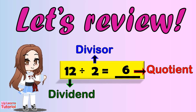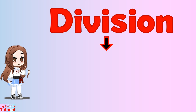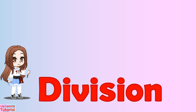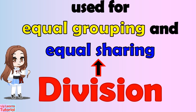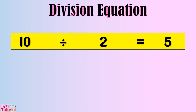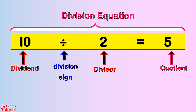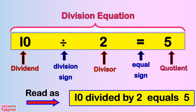Let's review. Division is one of the four basic mathematical operations. In simple words, division can be defined as the splitting or sharing of a large group into smaller groups, such that every group will have an equal number of items. It is an operation used for equal grouping and equal sharing in math. This is a division equation: ten is the dividend, two is the divisor, five is the quotient. This is the division sign, and this is the equal sign. We can read this as ten divided by two equals five.